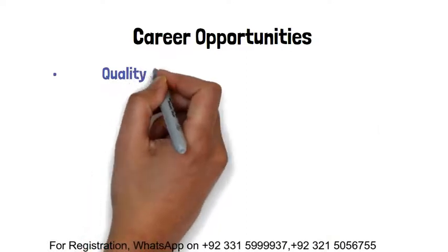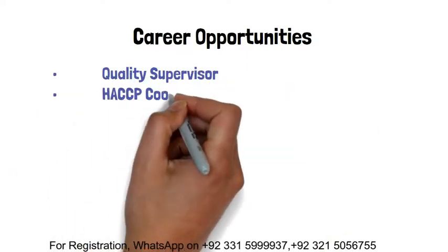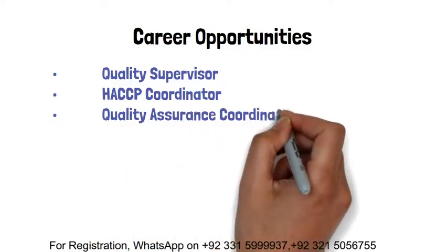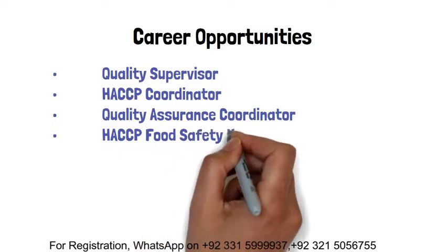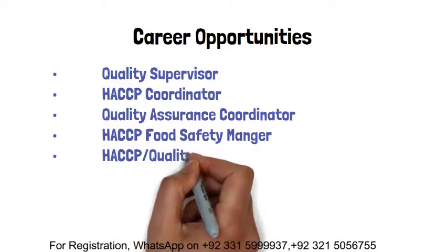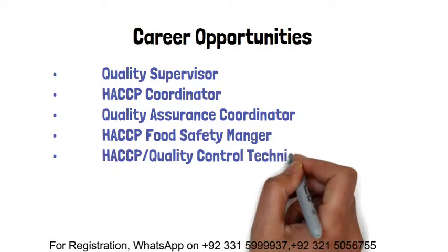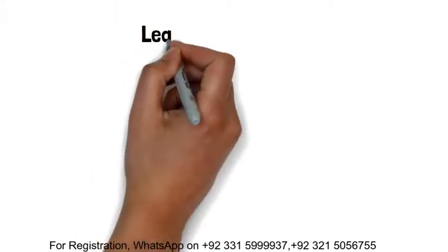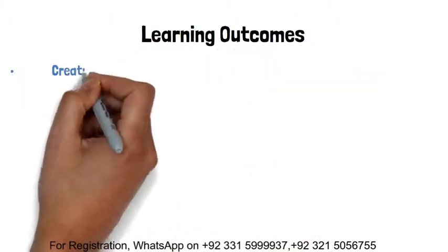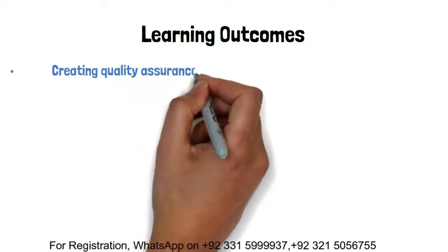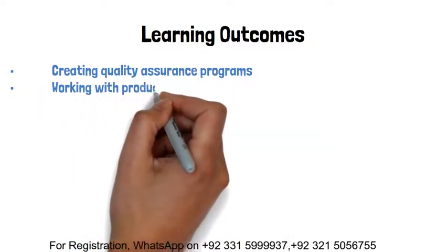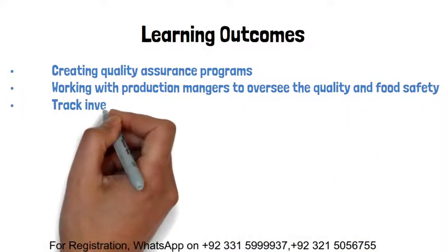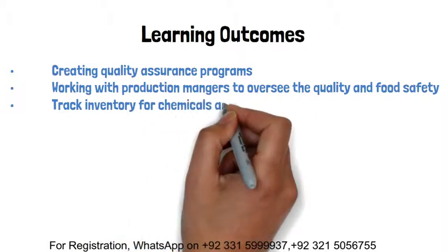Career roles related to this qualification include: Quality Supervisor, HACCP Coordinator, Quality Assurance Coordinator, HACCP Food Safety Manager, HACCP/Quality Control Technician, and Health and Safety Coordinator. Responsibilities include creating Quality Assurance Programs, working with Production Managers to oversee quality and food safety, and tracking inventory for chemicals and sanitation supplies.